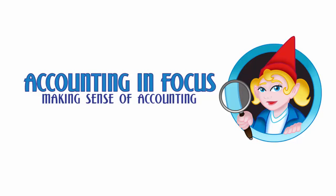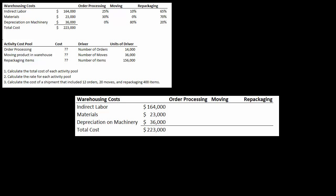Welcome to Accounting in Focus. In this video we are going to talk about activity-based costing. In the first step of activity-based costing we need to calculate the cost pool amounts that we're going to use as the cost for each activity. This is a multi-step problem, so in the first video we're just going to do item 1: calculate the total cost of each activity pool.